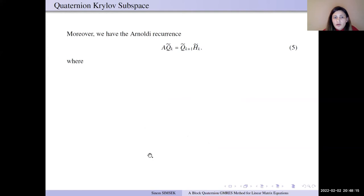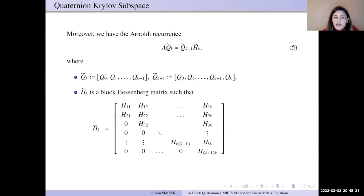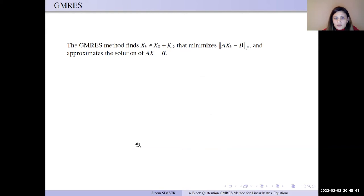The matrices Q0, Q1, and Qk are orthonormal and we can find Hj,k matrices like this by inner product multiplication. And then the matrices Qk and Hk+1,k can be found by QR factorization of rk. Moreover, now we have the Arnoldi recurrence AQk equals Qk+1 times Hk tilde, where Qk tilde and Qk+1 tilde are orthonormal matrices, and Hk tilde is block Hessenberg matrices.